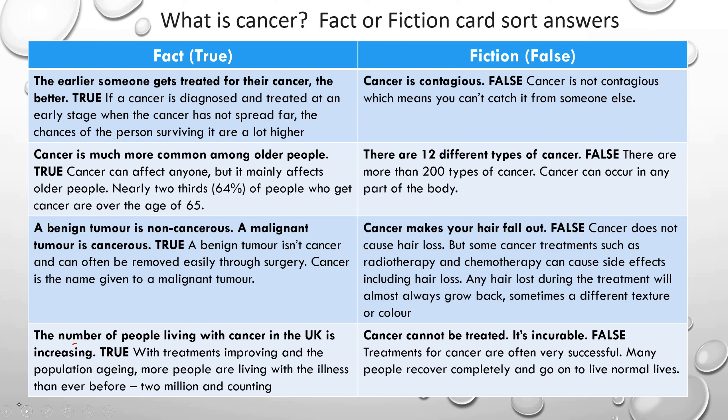Another true statement: 'Cancer is much more common among older people.' This is because, as we said, as you get older your cells make more mistakes when they divide. It can affect anyone, but mainly older people — nearly two-thirds, about 64% of people who get cancer, are over the age of 65. A false statement: 'There are 12 different types of cancer.' There are actually more than 200 types of cancer. Any part of your body can get cancer — lung cancer, liver cancer, pancreatic, brain cancer, skin cancer. Every type of organ and tissue can get cancer when these cells start to divide out of control.